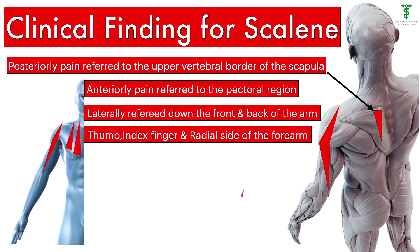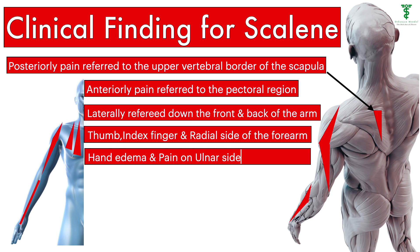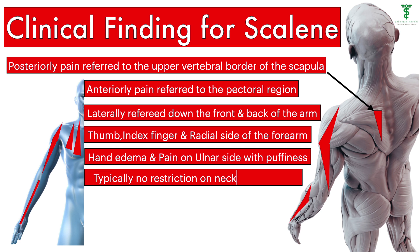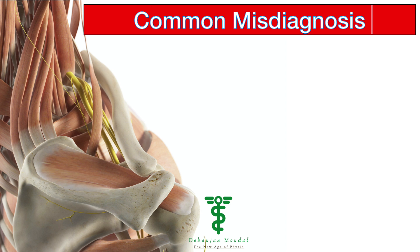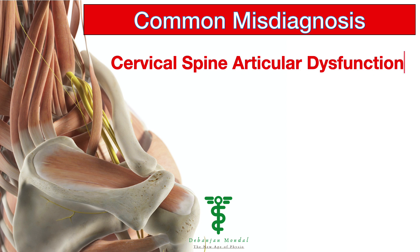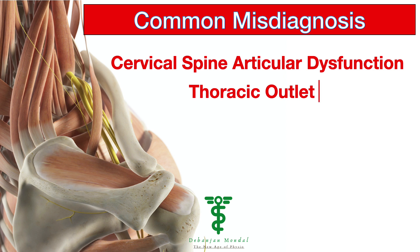Pain on the ulnar side with puffiness of the hand suggests brachial plexus and subclavian vein entrapment, causing ulnar pain, tingling, and numbness. Typically there is no restriction in neck movement. Common misdiagnoses with Scalene Muscle involvement include Cervical Spine Articular Dysfunction, Thoracic Outlet Syndrome, Carpal Tunnel Syndrome, and C5-C6 Radiculopathy.